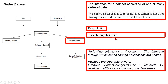Overview of SeriesChangeListener: the interface through which series change notifications are posted. Interface SeriesChangeListener in package org.jfree.data.general provides methods for receiving notification of changes to a data series. Typically, a dataset will implement this interface to receive notification of any changes to the individual series in a dataset, which will normally be passed as a dataset change event.